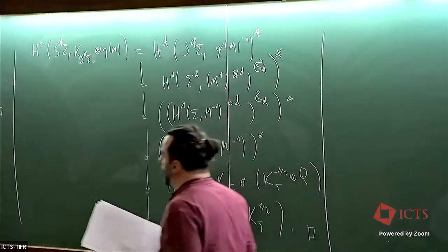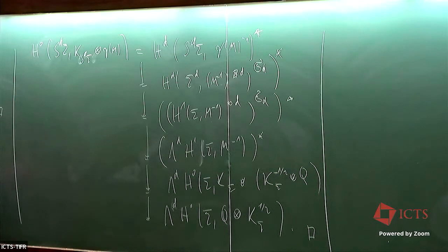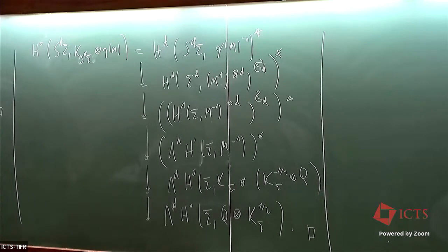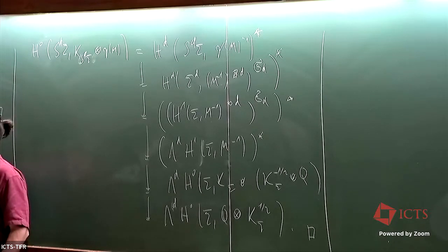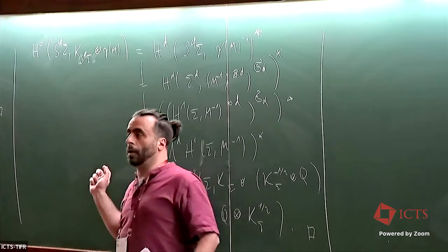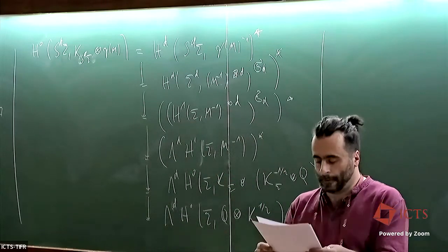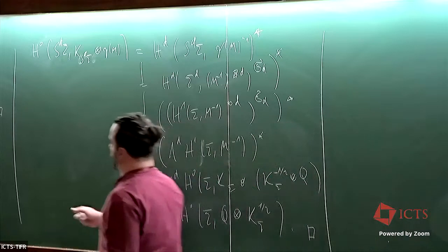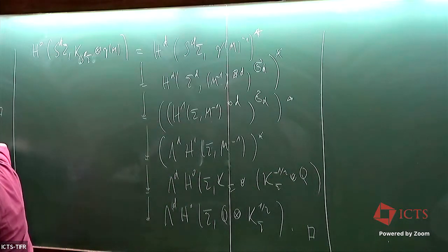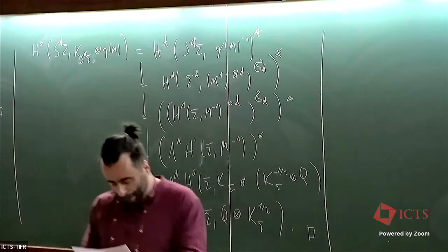One thing to emphasize: this is an isomorphism of vector spaces. On the moduli space side we have more structure — we obtained it as a Hilbert space with a canonical inner product coming from the data needed to write out the vortex equations. There will be metric structure on the sigma side too, but we don't get it automatically from this calculation, which is all complex geometry. We can transfer the inner product, but this calculation alone does not give an isometric isomorphism.